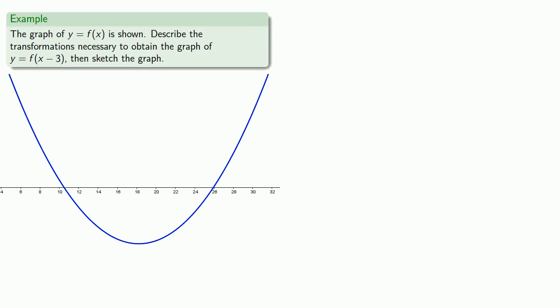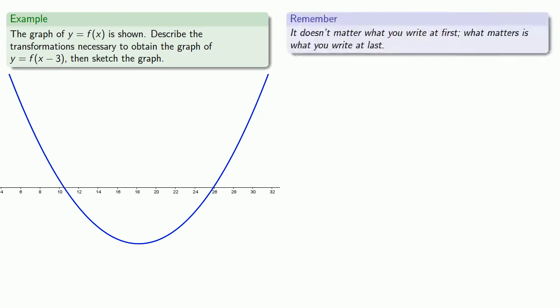What if we have a graph? Let's find the transformations necessary to obtain the graph of y equals f of x minus three, and then sketch our graph. The problem here is identifying the transformations. The important thing to remember is it doesn't matter what you write at first — what matters is what you write at last. There's a limited number of transformations we can do, so we can just go through them and see which one works.